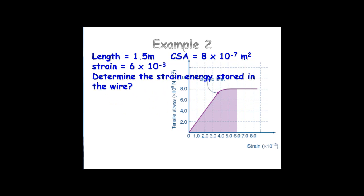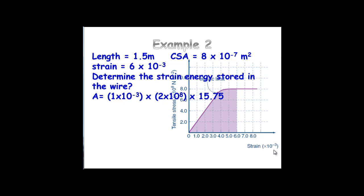The second question: determine the strain energy stored in the wire. We want to find the energy per unit volume, so we're effectively finding the area under the graph by counting up the number of squares: 1, 2, 3, 4, 5, 6, 7, 8, 9, 10, 11, 12, 13, 14, 14 and a half — not quite 15, so roughly 15.75 squares. We multiply that by the unit of each square: the height is 2 times 10 to the 8, and the horizontal unit is 1 times 10 to the negative 3. That gives us 3.15 megajoules per metre cubed.